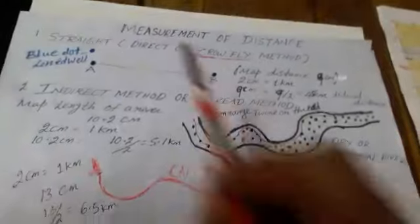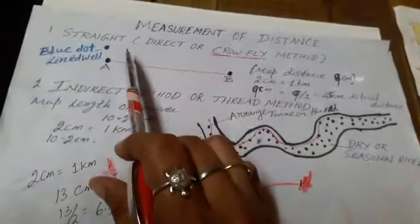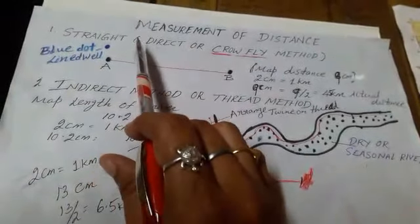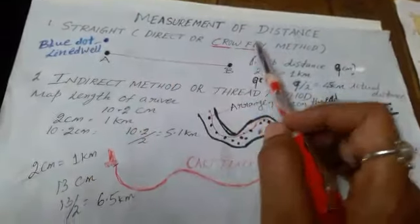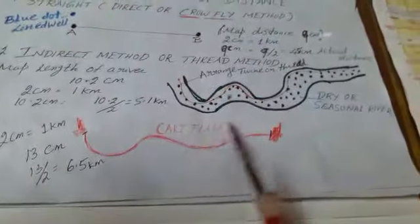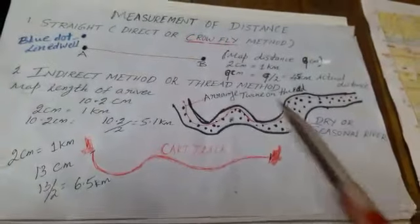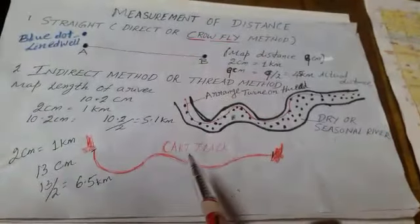Now, measurement of distance. How do we measure distance? With the help of two methods: one is the straight, direct, or crow-fly method; and the second is the indirect method, also called the thread method.